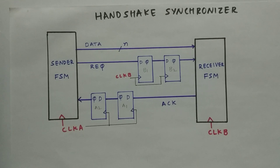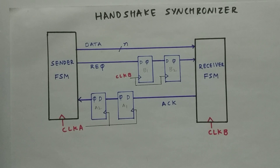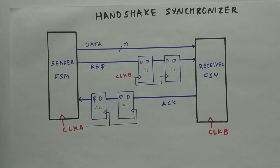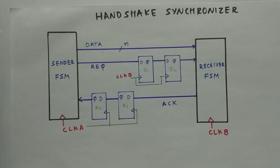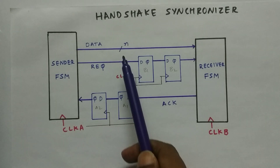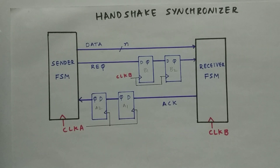So why do we need a handshake synchronizer? We have a two-flop synchronizer to send data, but there is a problem with it — we are only able to send a single bit at a time. So if you want to send an N-bit data, you would require N two-flop synchronizers. That's the reason we go with the handshake synchronizer.